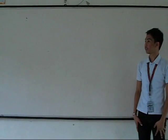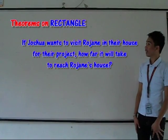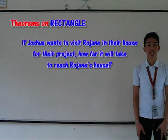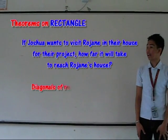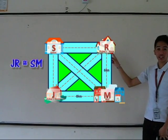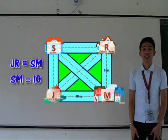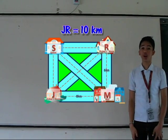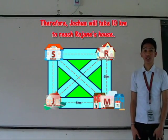Last problem. If Joshua wants to visit Regene's house for their project, how far would it take to reach Regene's house? This problem emphasizes the second theorem on rectangle, in which the diagonals of a rectangle are congruent. So line segment JR is congruent to line segment SM. Since line segment SM equals 10 kilometers, then line segment JR is also equal to 10 kilometers. Therefore, Joshua will travel 10 kilometers to reach Regene's house.